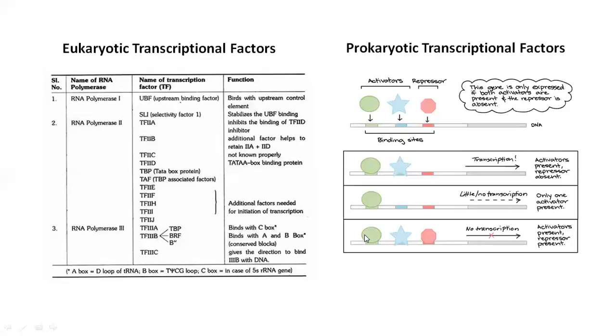After that, we have a list of eukaryotic and prokaryotic transcription factors. One important thing is that in eukaryotes, we have three types of RNA polymerases.